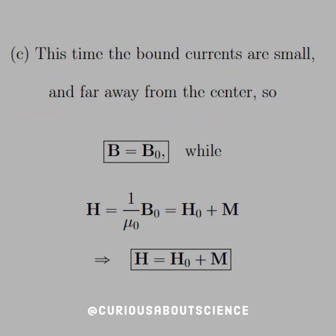For Part C, this time the bound currents are small and far away from the center instead of being on top of it like the needle. So B equals B-naught, while H equals 1 over mu-naught B-naught. Substituting through, we see that the auxiliary field is equal to H-naught plus the magnetization, which we'll see some sketches of soon.